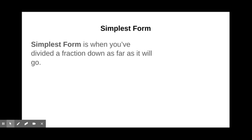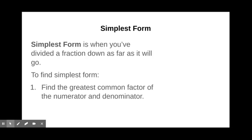When we do this division, we'll be working to find the simplest form of a fraction. Simplest form is when you've divided a fraction down as far as it will go. It's still an equivalent fraction, but it's written using the smallest numbers possible. There are a couple steps to do this. Step 1 is to find the greatest common factor of your numerator and denominator. And step 2 is just to divide.